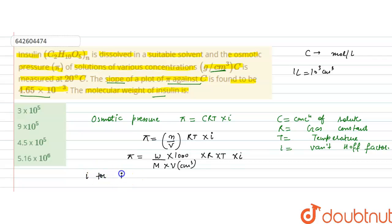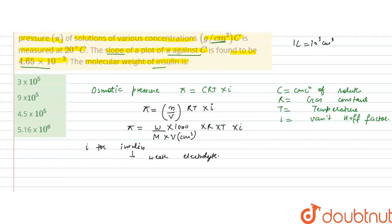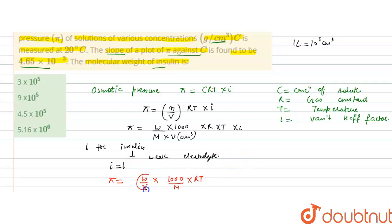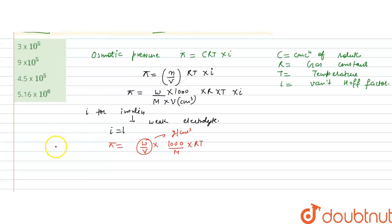For insulin, it behaves as a weak electrolyte, so the Van't Hoff factor i equals 1. Therefore phi simplifies to (w/V) × 1000/M × RT, where w/V is the concentration c in gram per centimeter cube.